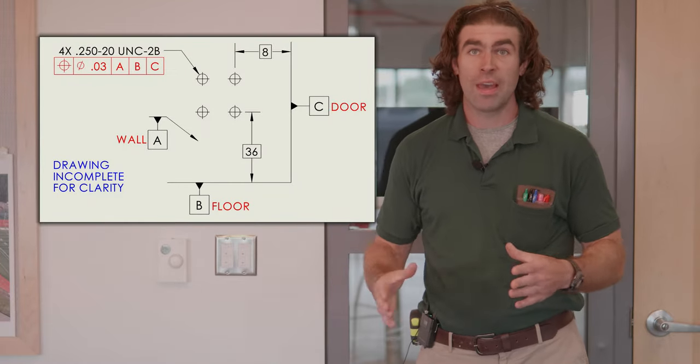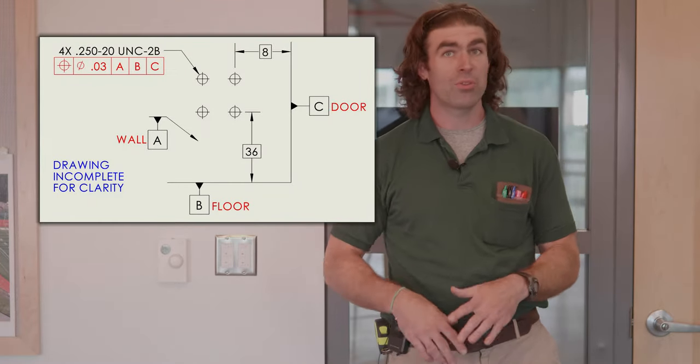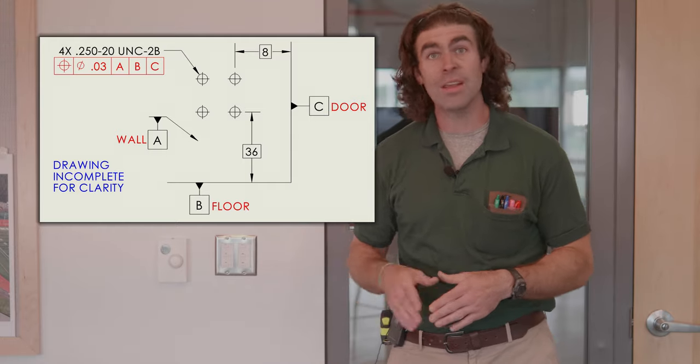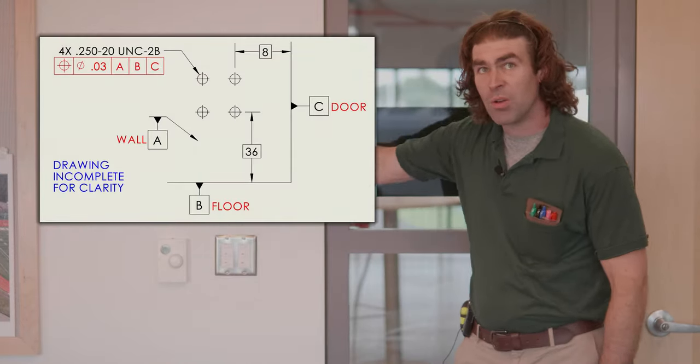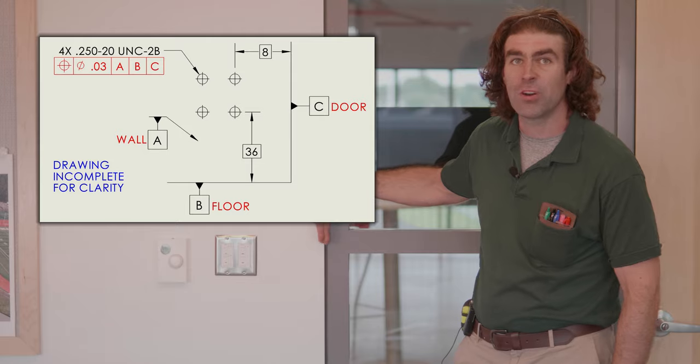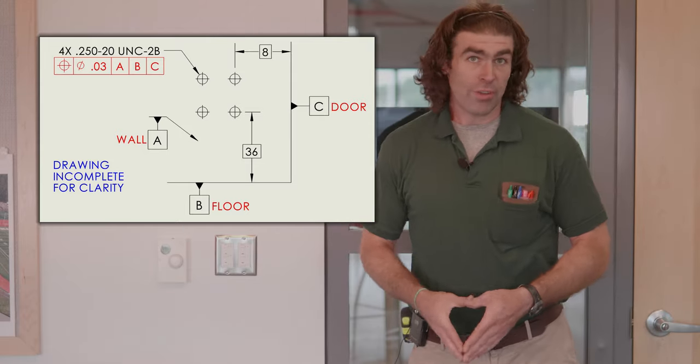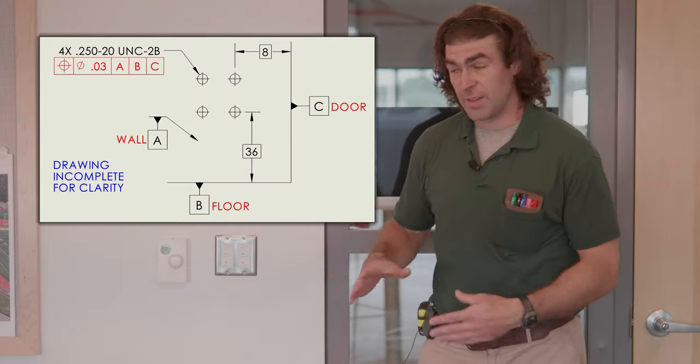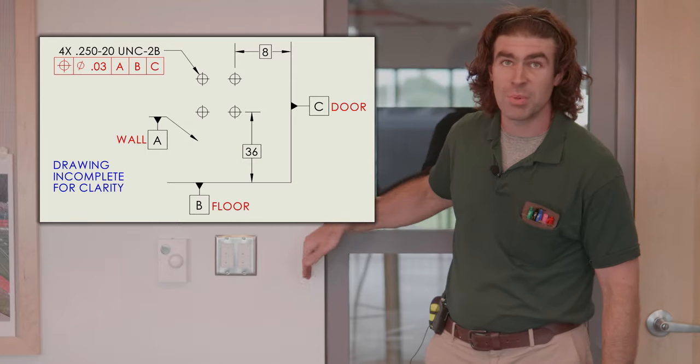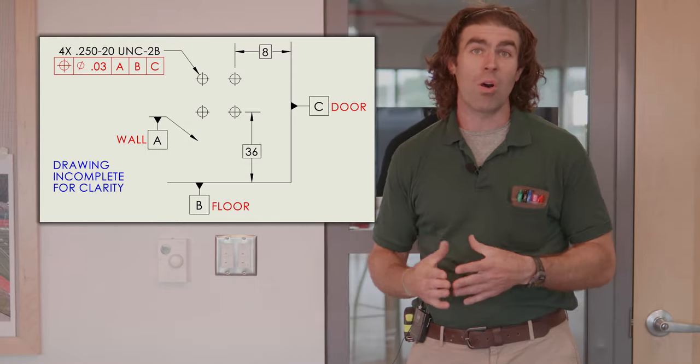If we make a drawing, a positional tolerance, 30 thou to some datums. So what are the datums in this situation? The floor, let's say this door jamb and the wall. So A, B, and C. A wall, B floor, C door jamb. We'll put those on the drawing, and it'll be big. It'll be like 36 inches from here, 8 inches from here, and against the wall.